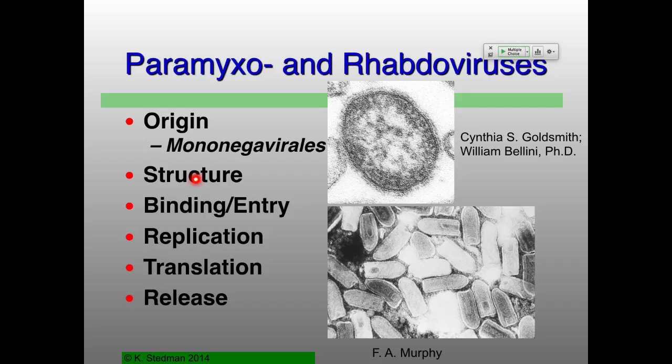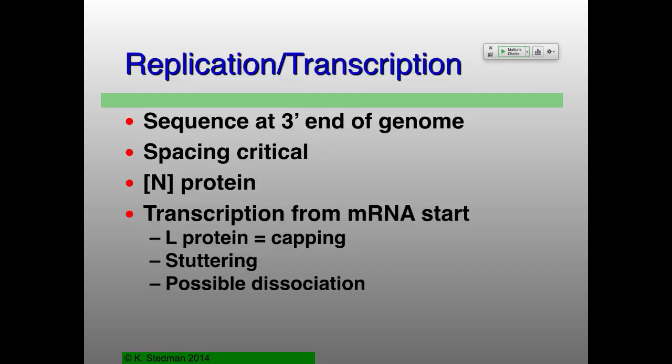Continuing with the mononegavirales — where we left off last time really had to do with replication and messenger RNA production. This is a slide I finished up with last time. There are a few things that are very important in terms of this switch between making messenger RNAs and making genome. For messenger RNAs, you have this start-stop thing. RNA-dependent RNA polymerase binds to one of the genes, gets to the intergenic region, and in some cases will fall off and go back and start again.